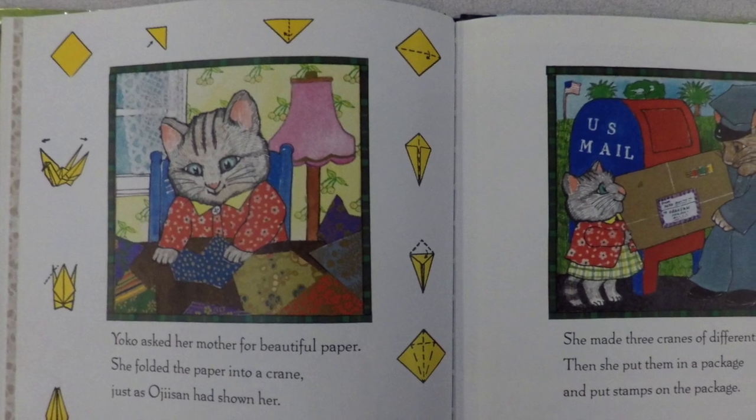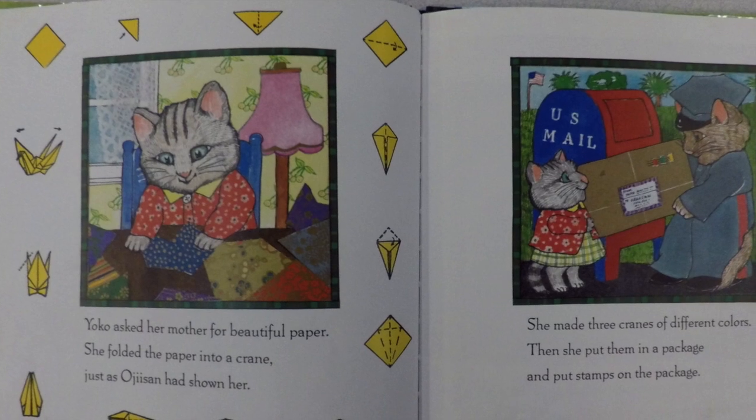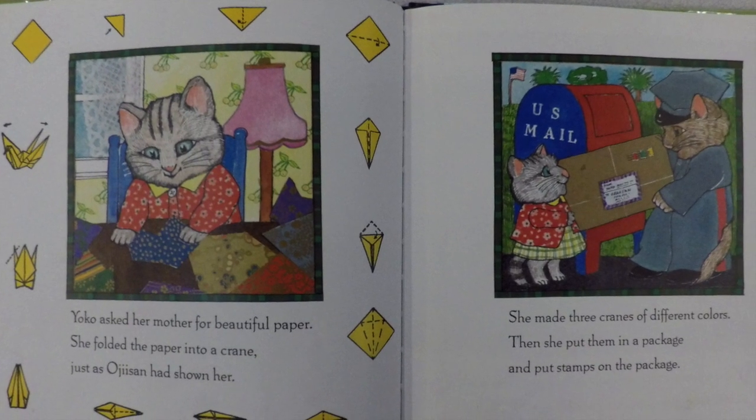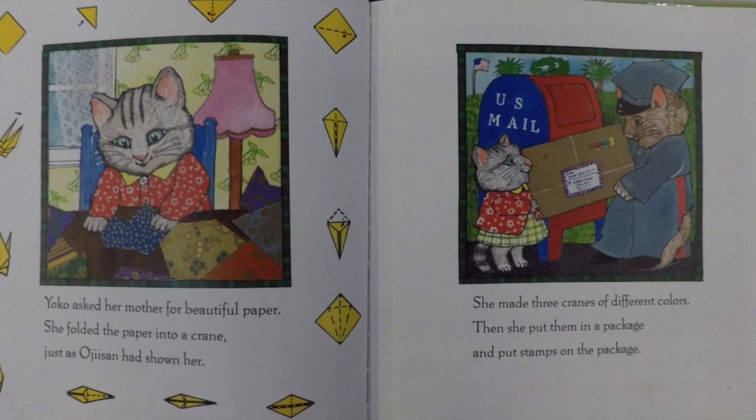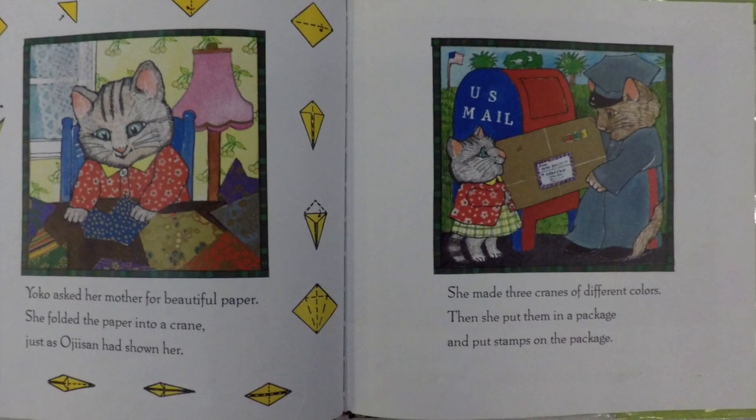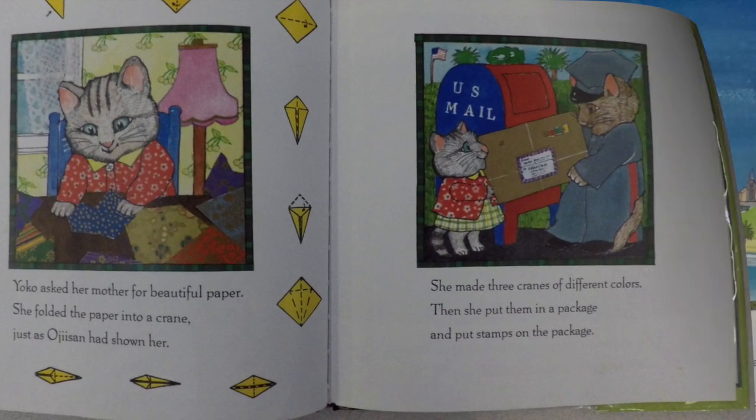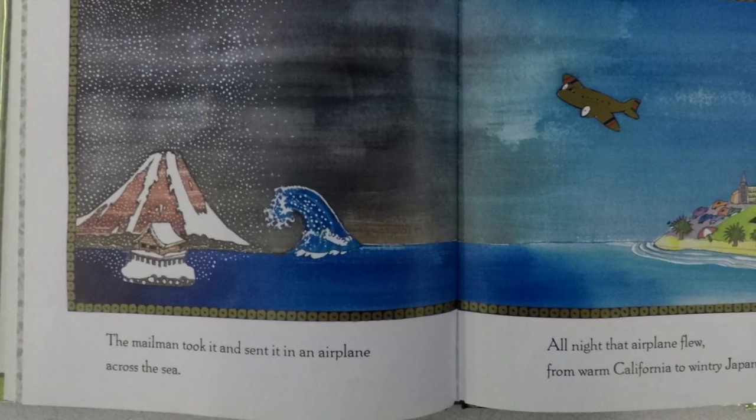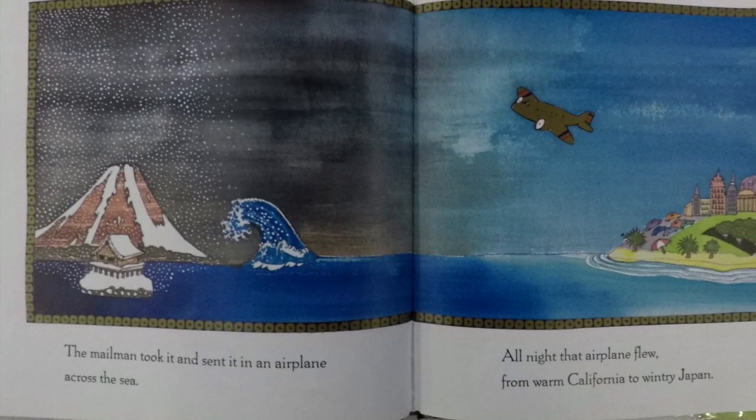Yoko asked her mother for beautiful paper. She folded the paper into a crane just as Oji-san had shown her. She made three cranes of different colors. Then she put them in a package and put stamps on the package. The mailman took it and sent it in an airplane across the sea.